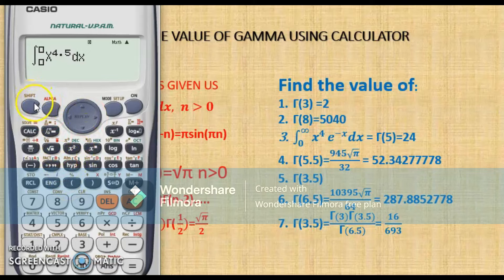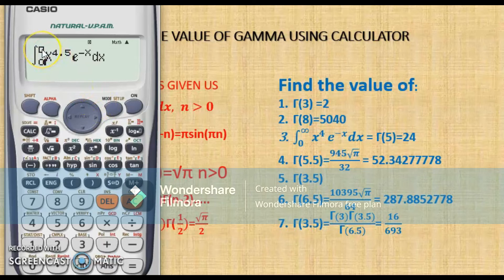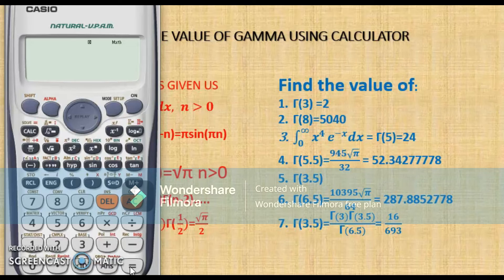Now hit the arrow sign, then type e: press alpha, then the exponent key, then negative x. Hit the arrow sign again — it will send the cursor to the base of the integral. We know it goes from 0 to infinity, but the infinity sign is not on the calculator, so I'll use an approximate figure. The higher the figure, the longer the calculator takes, so I'll limit myself to 100. Hit the arrow key, type 100 as the upper limit, then press the equal sign.